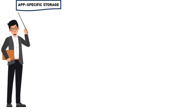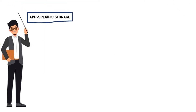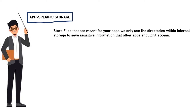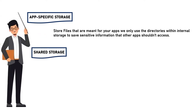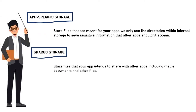App-specific storage: store files that are meant for your app. We only use the directories within internal storage to save sensitive information that other apps shouldn't access. Shared storage: store files that your app intends to share with other apps, including media, documents, and other files.